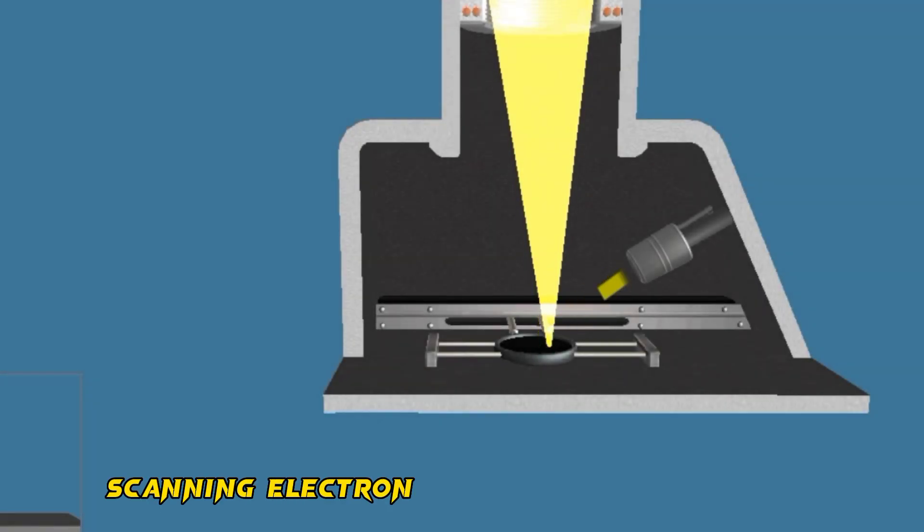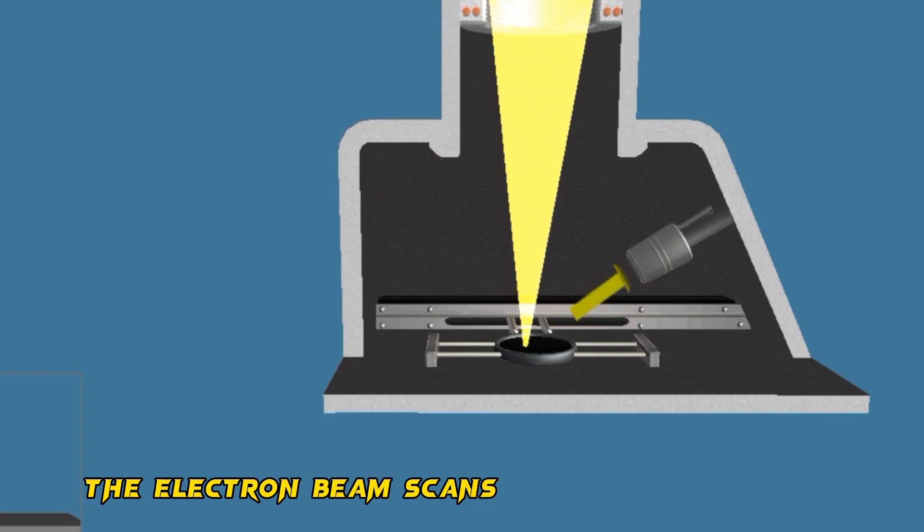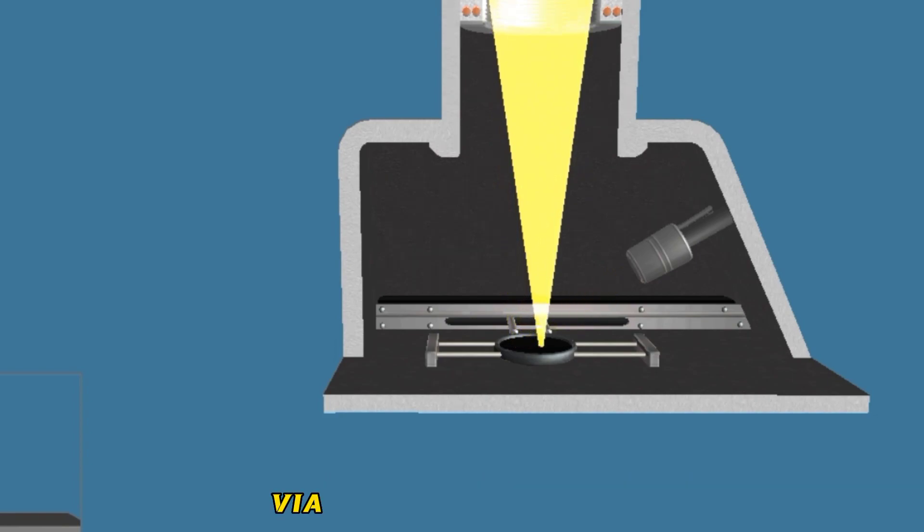Scanning electron microscopes create 3D images of the surface of the samples. The electron beam scans the surface of the sample via the deflection coil.